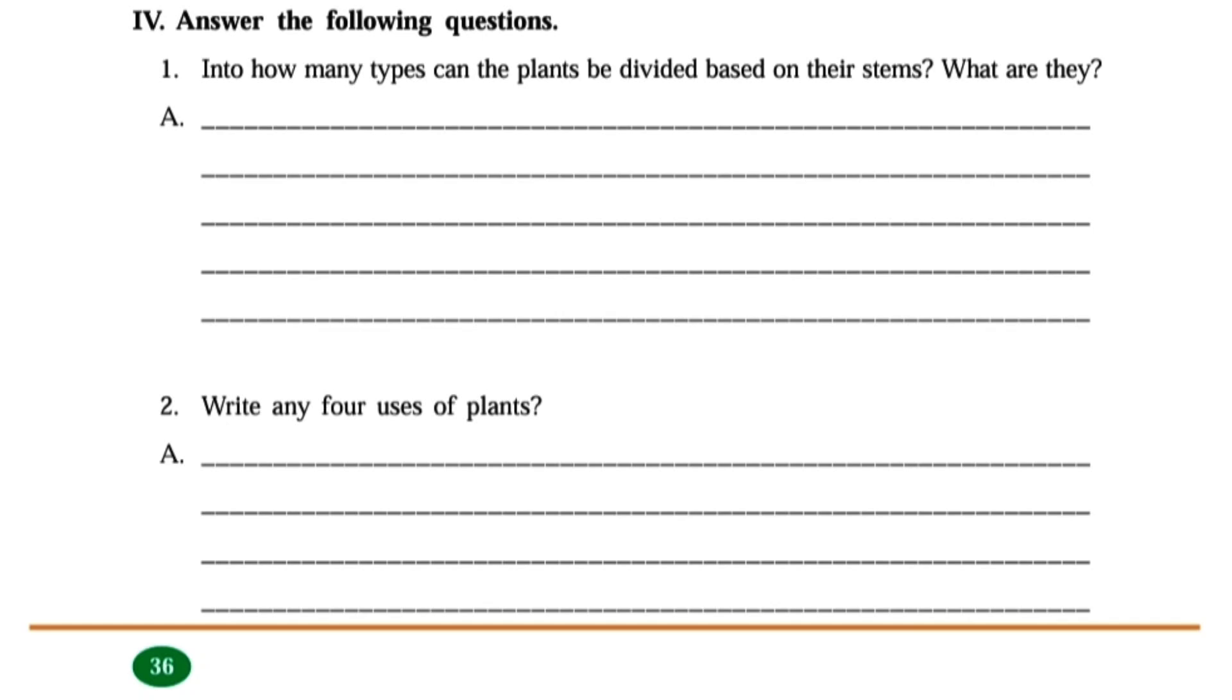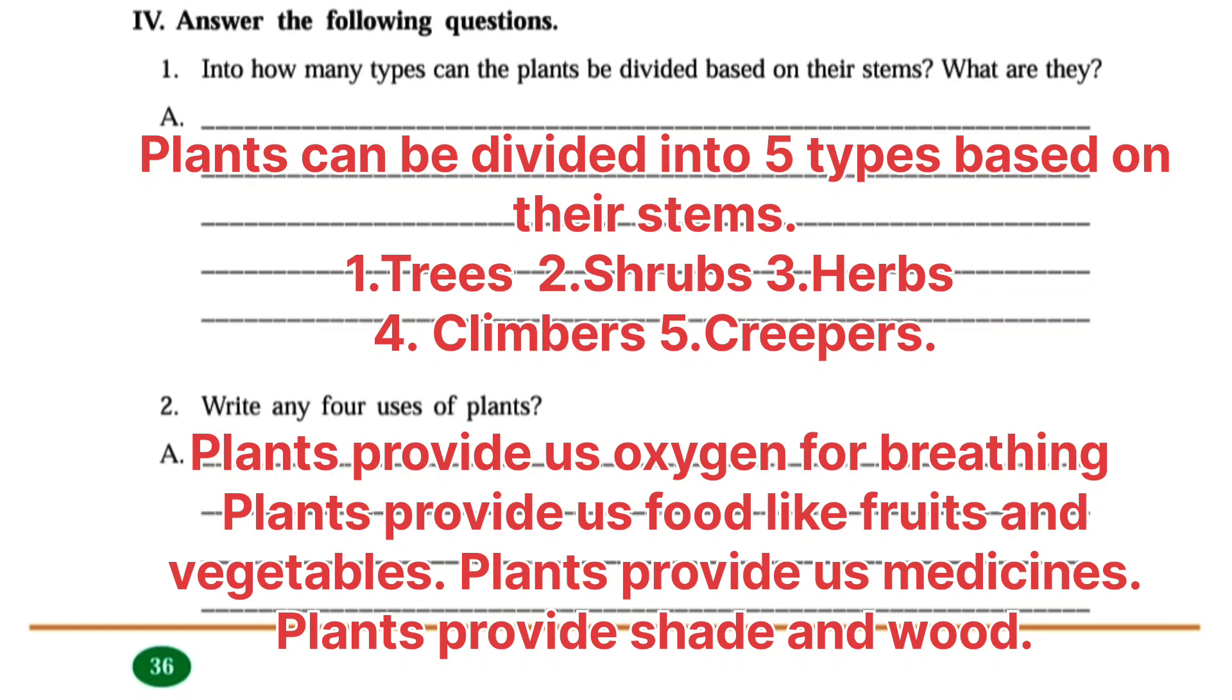Next one: Answer the following questions. Into how many types can the plants be divided based on the stems? Answer: Plants can be divided into five types based on their stems. First one Trees, Second one Shrubs, Third one Herbs, Fourth Climbers, And fifth Creepers.